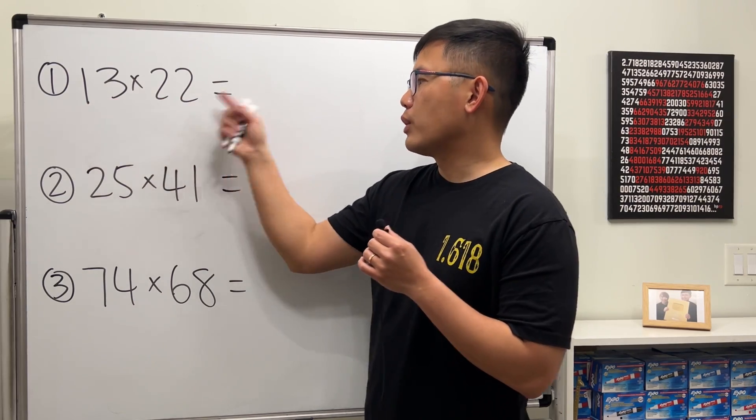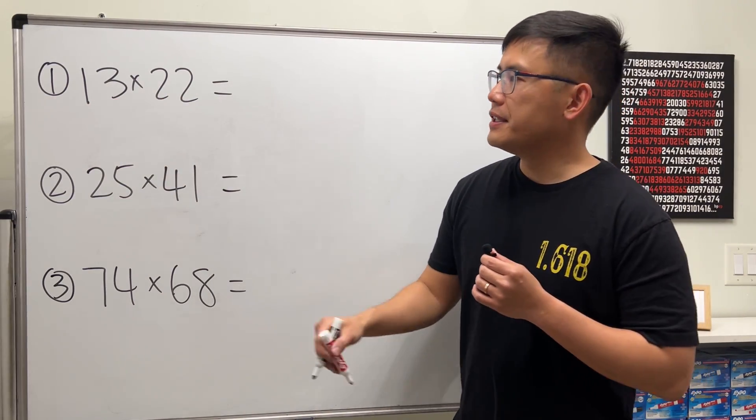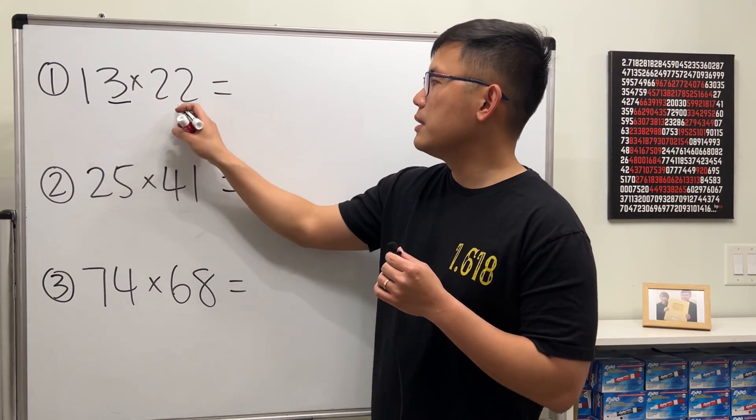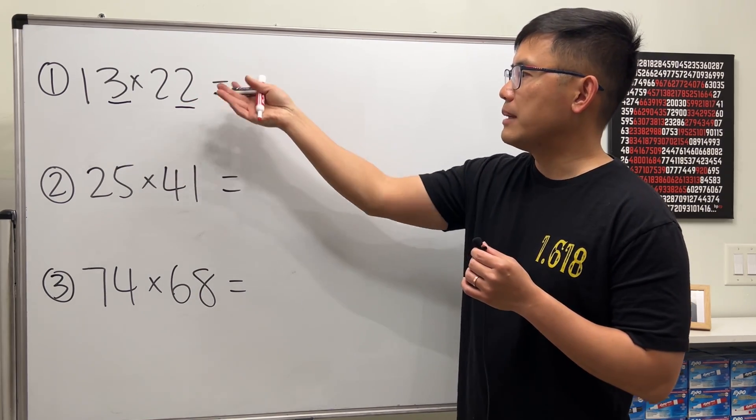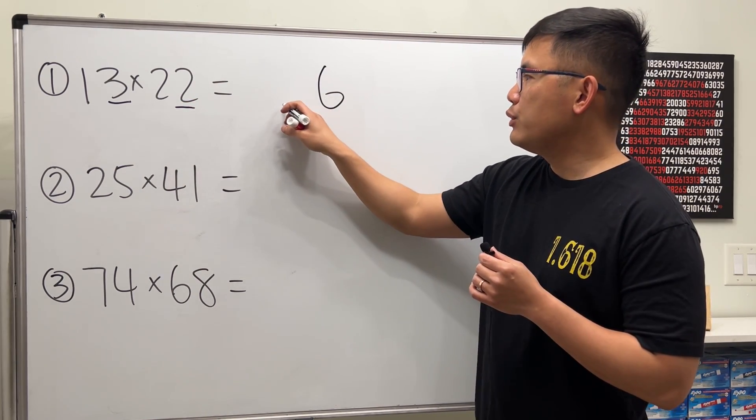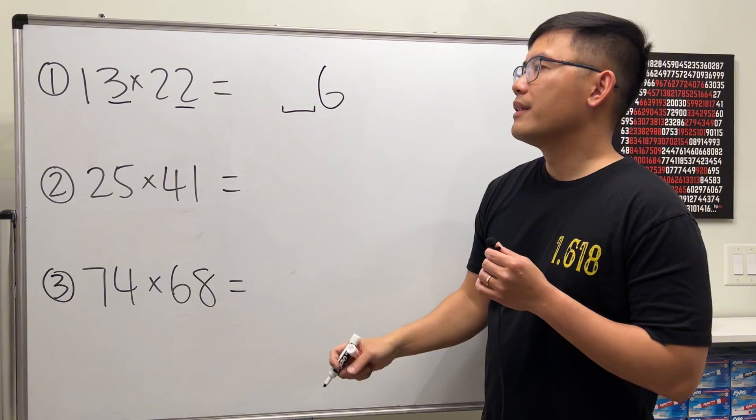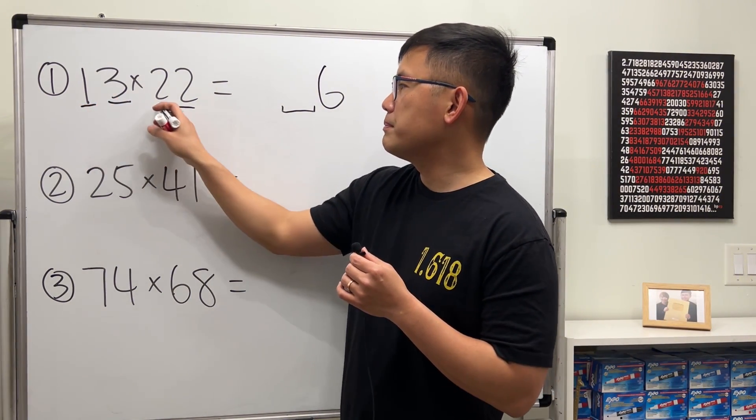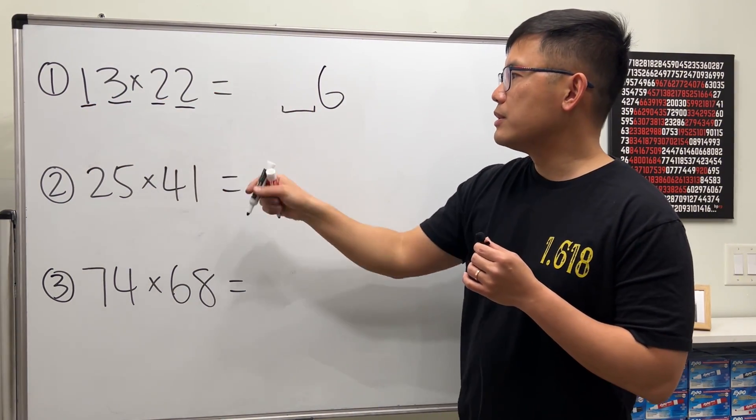13 times 22. What you want to do first is multiply the unit digit by the unit digit: 3 times 2 is 6. Then you leave a spot right here. Then you multiply the 10th digit by the 10th digit, so 1 times 2 is 2.